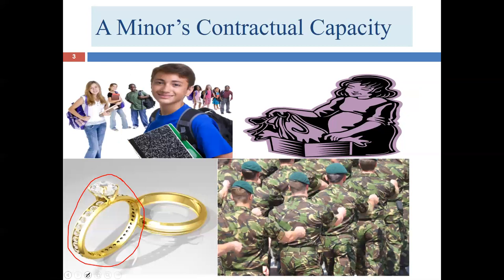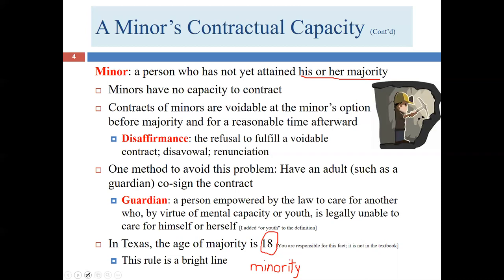The law won't say Bob is so sophisticated that we'll give him contractual capacity before Brad. It's all based upon birth date. If Bob was born at 11:58 p.m. one night and Brad at 12:03 a.m. the next day, they'd actually have different birthdays and gain contractual capacity at different times. We call this a bright line test.